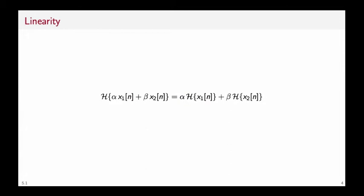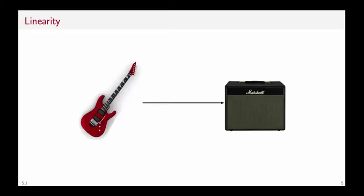So the first requirement that we impose on a filter is linearity. Linearity means that if we have two inputs and we take a linear combination of said inputs, the output is a linear combination of outputs that could have been obtained by filtering each sequence independently. This is actually a very reasonable requirement. For instance, take a situation where your processing device is an amplifier, and you connect a guitar to your amplifier. Now, if you play one note and then you play the same note louder, you expect the amplifier to produce just a louder note.